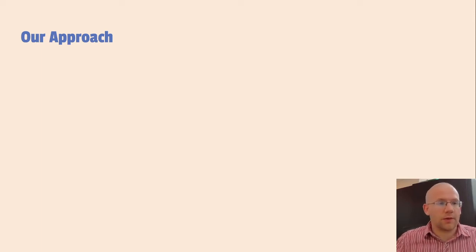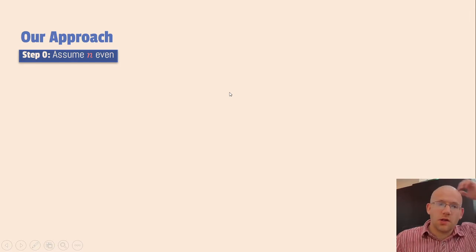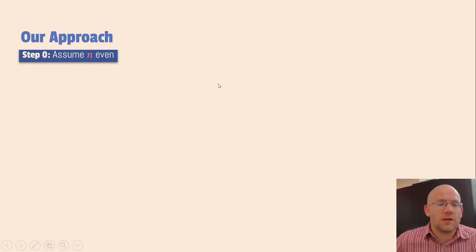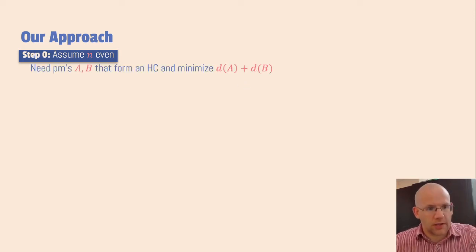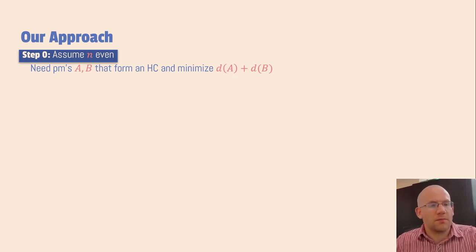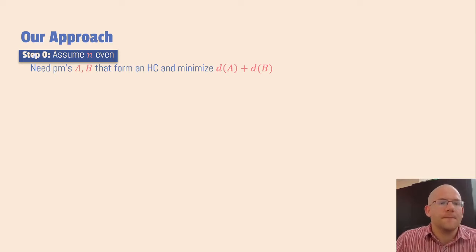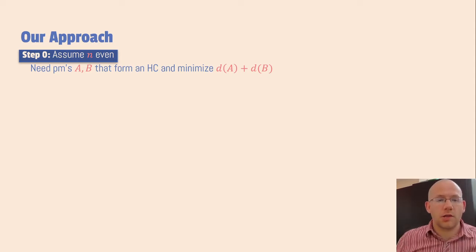In the remainder of the talk I will tell you about the approach taken in this paper. There are three steps and the first step is pretty easy: we assume that the number of vertices is even. This can be done by just adding an artificial vertex. What this achieves is that we can now think of the problem as trying to find two perfect matchings A and B that form a Hamiltonian cycle and minimize the sum of the total distance of the two matchings.